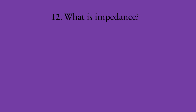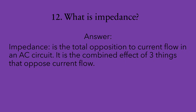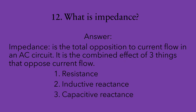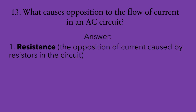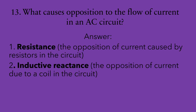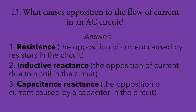Number twelve: what is impedance? Impedance is the total opposition of current flow in an AC circuit. It is a combined effect of three things that oppose current flow: one, resistance, caused by the resistors; two, inductive reactance, caused by the coils; and three, capacitive reactance, caused by the capacitors. Number thirteen: what causes opposition to the flow of current in an AC circuit? One, resistance. Two, inductive reactance. And three, capacitive reactance.